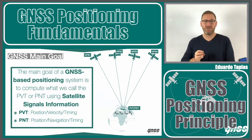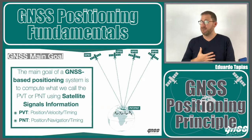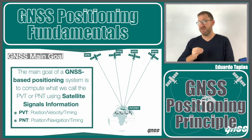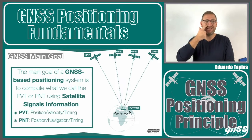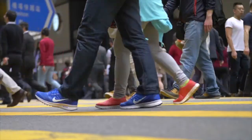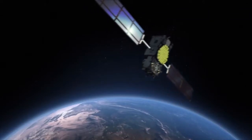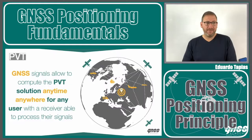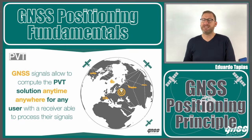The main goal of a GNSS positioning system is to compute what we call a PVT — positioning, velocity, and timing. Or we also call it PNT: positioning, navigation, and time. For this, we use the signals coming from the satellites, which allow us to compute the PVT anytime and anywhere in the world for any user receiver that receives the signals.